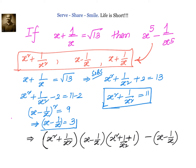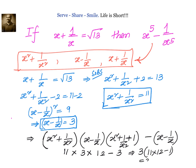Now we are pretty much ready to substitute the values and get our answer. x square plus 1 by x square is 11, x minus 1 by x is 3, and x square plus 1 by x square plus 1 is 12. So we get 3 into 11 into 12 minus 1, which is 3 into 131, and that equals 393. So our answer is 393.